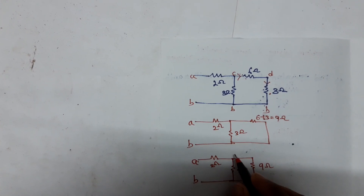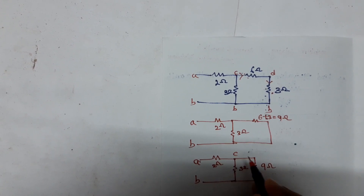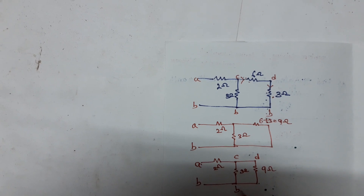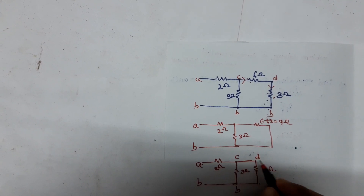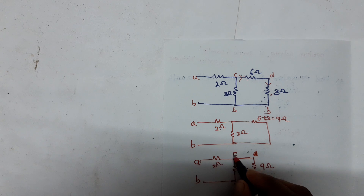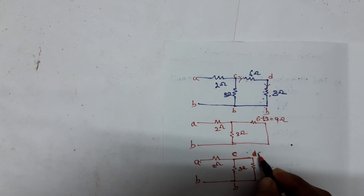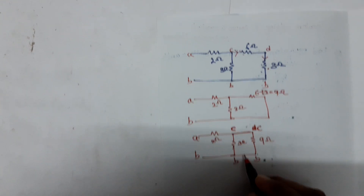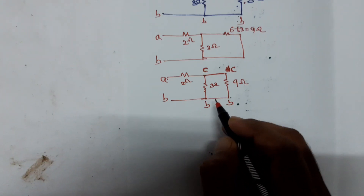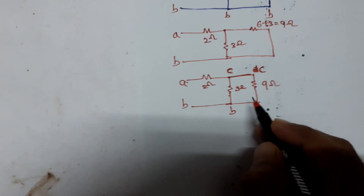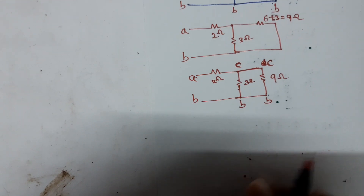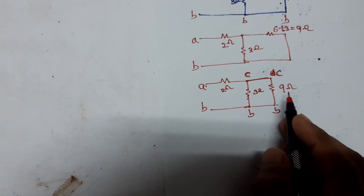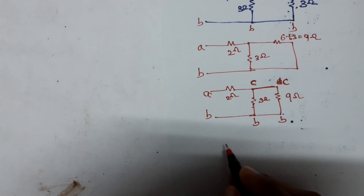We modify the circuit further: this is 9 ohm, this is 3 ohm, and this is 2 ohm. Renaming nodes: this is C, this is D, this is B. Since C is there and there is no resistor between them, the 3 ohm and 9 ohm are both connected between C and B — so 3 ohm and 9 ohm are connected in parallel.